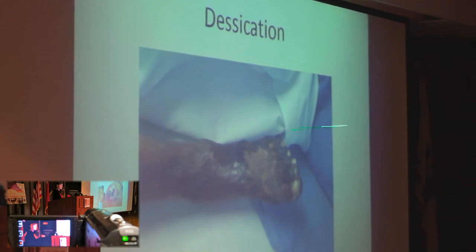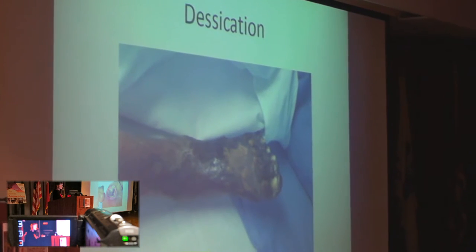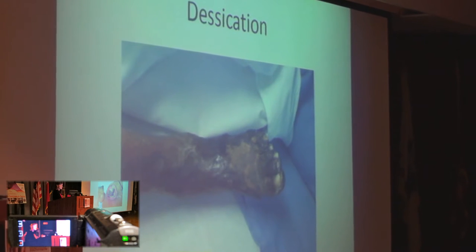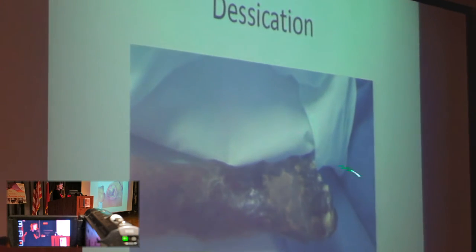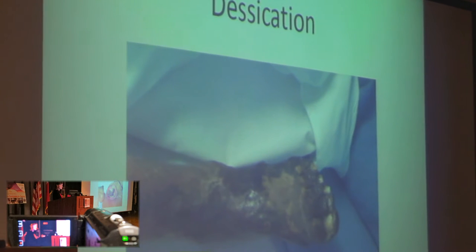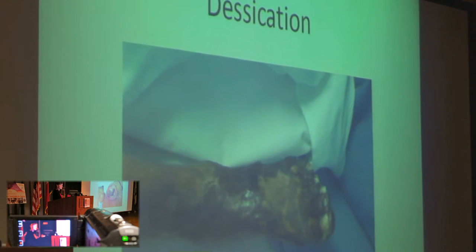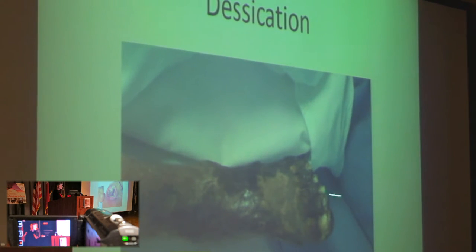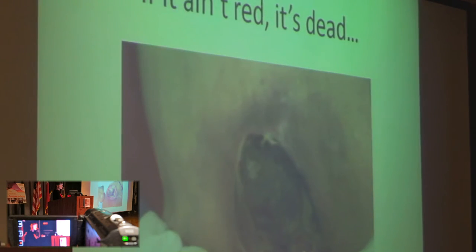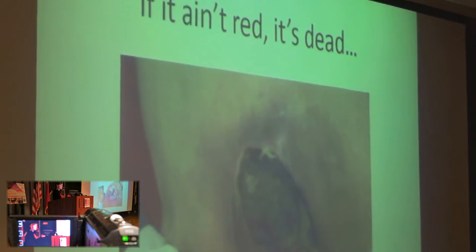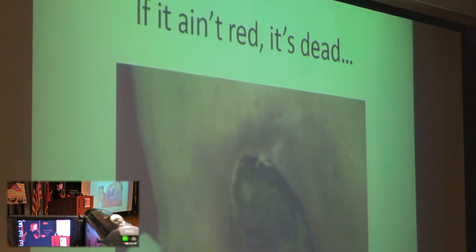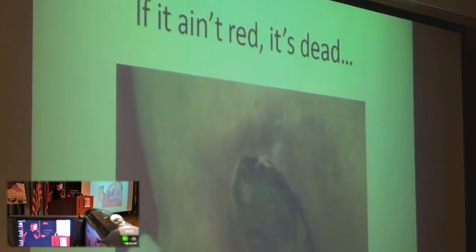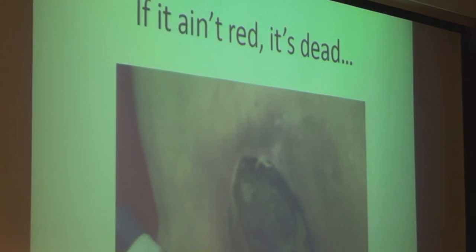Desiccation — this is a patient who came to wound care a little too late. You can see the tissue from about an inch down is completely desiccated or mummified. This is a patient who had severe ischemic disease and denied it, finally coming when it was too late. He ended up with the ultimate debridement, which would be an amputation. So if you're looking at wound tissue and it ain't red, generally it's dead — and it needs to come out.